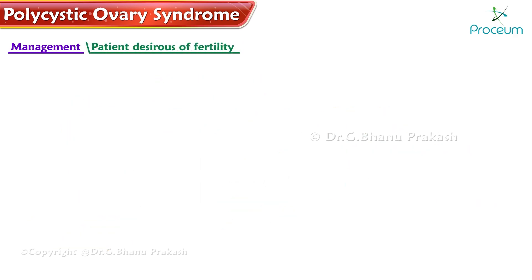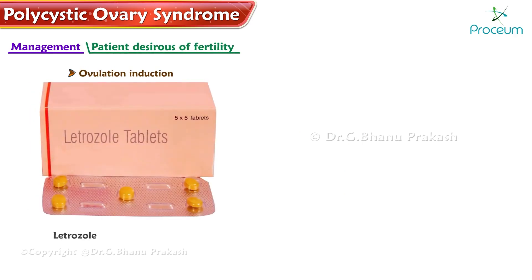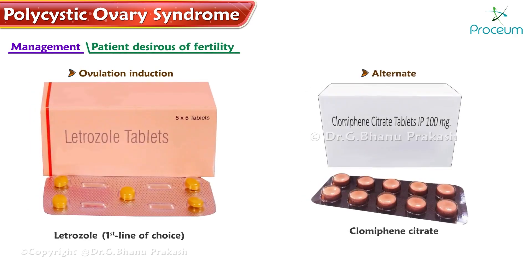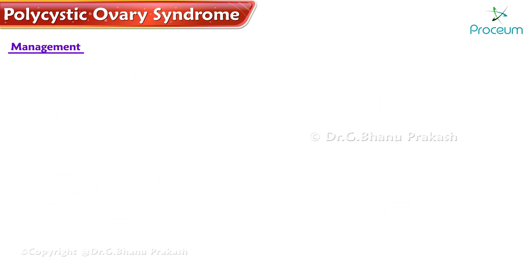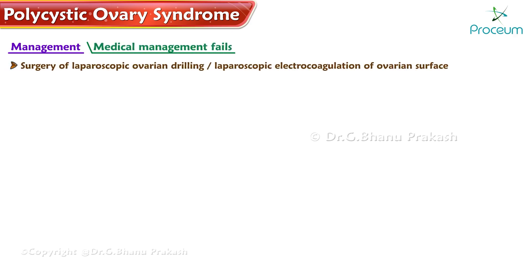If a patient is desirous of fertility, ovulation induction with letrozole is the first line of choice, with clomiphene citrate as an alternate. If these fail, the next recommendation is human menopausal gonadotropin and human chorionic gonadotropin shots. If medical management fails, surgery — laparoscopic ovarian drilling or laparoscopic electrocoagulation of ovarian surface — is considered.